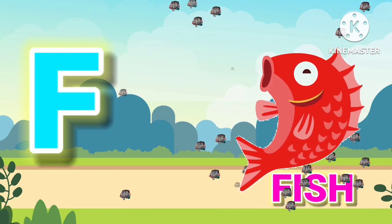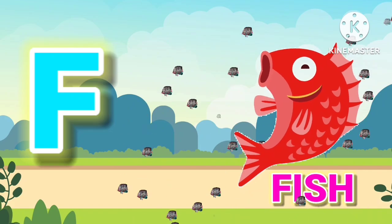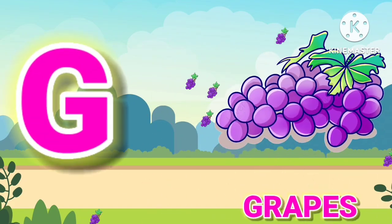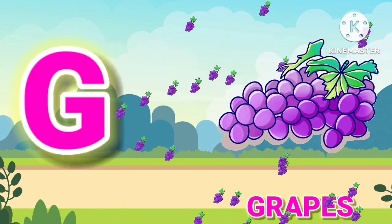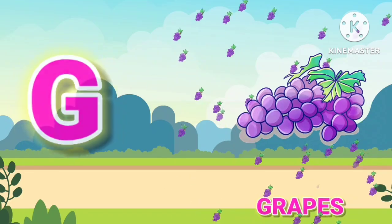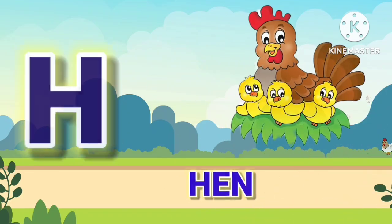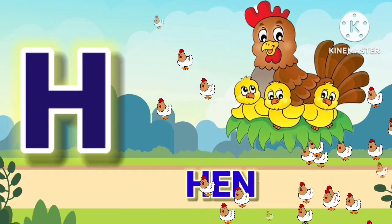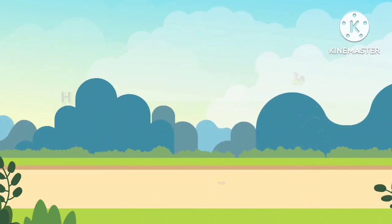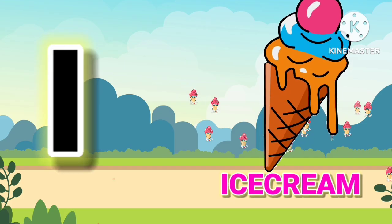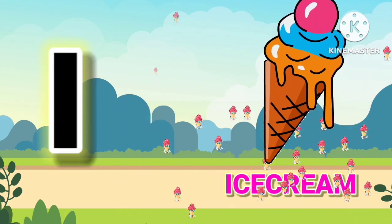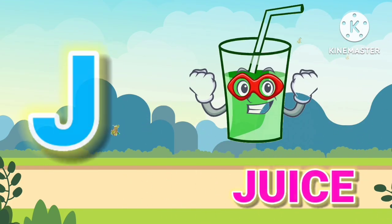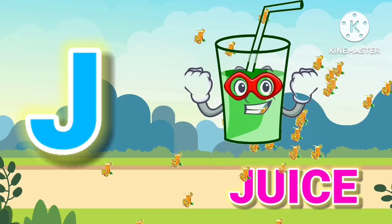F for fish, G for grapes, H for hen, I for ice cream, J for juice.